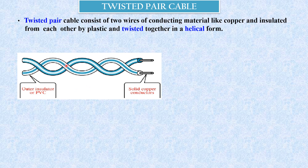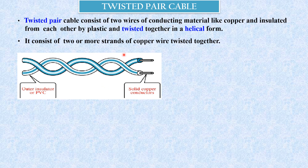The wires are twisted together in a helical form. There are two copper wires — a solid copper wire or solid copper conductor is shown. The insulator, or the outer covering of the copper wire, is made up of plastic material. These two copper wires are twisted in the form of a helix to form a helical shape. This is the schematic of a twisted pair cable. It consists of two or more strands of copper wire twisted together.